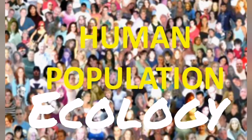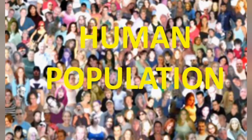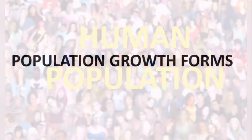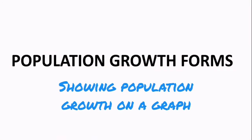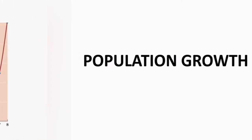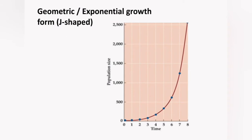In this video we conclude our chapter on population ecology by looking at human population ecology. The way a population increases in size can be shown on a graph by what we call population growth forms. There are two basic types, and the first shows geometric or exponential growth, commonly known as a J-shaped graph.